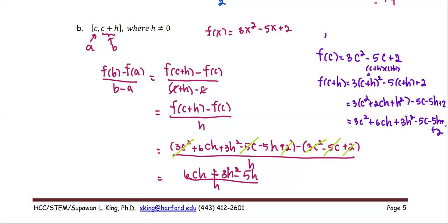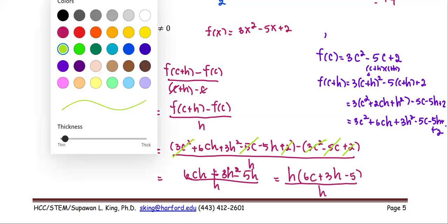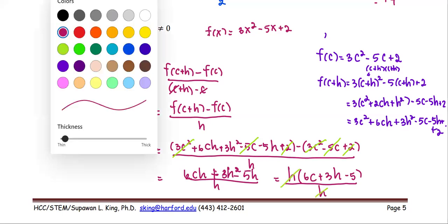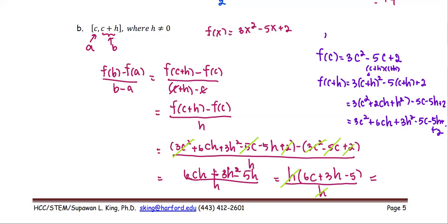All three terms in the numerator have h as a common factor. Factoring out h gives h(6c + 3h - 5), all divided by h. The h in the numerator and denominator cancel, so the simplified average rate of change is 6c + 3h - 5.